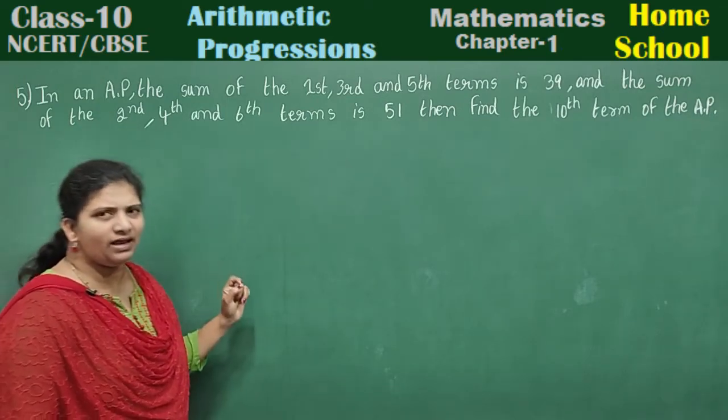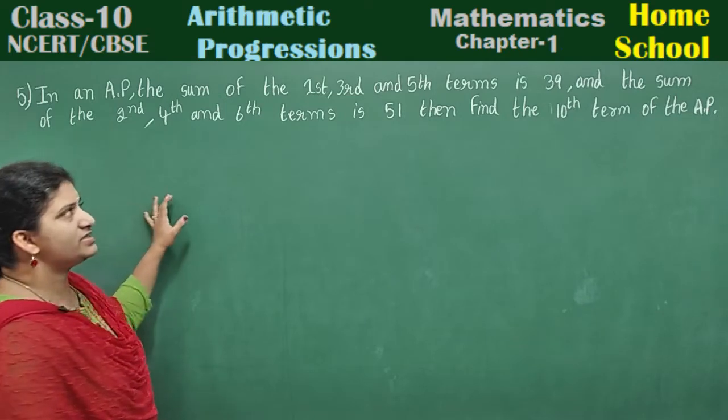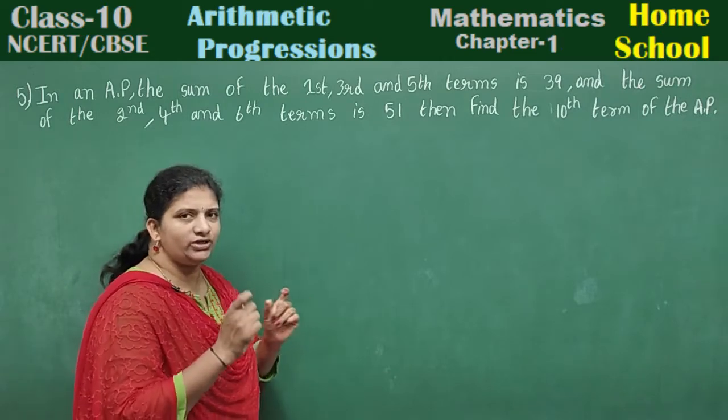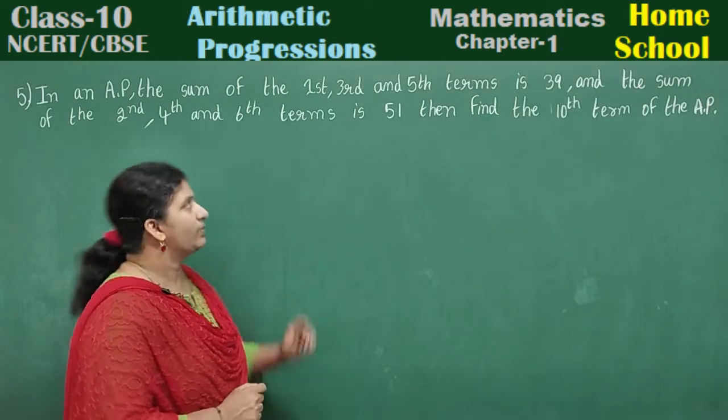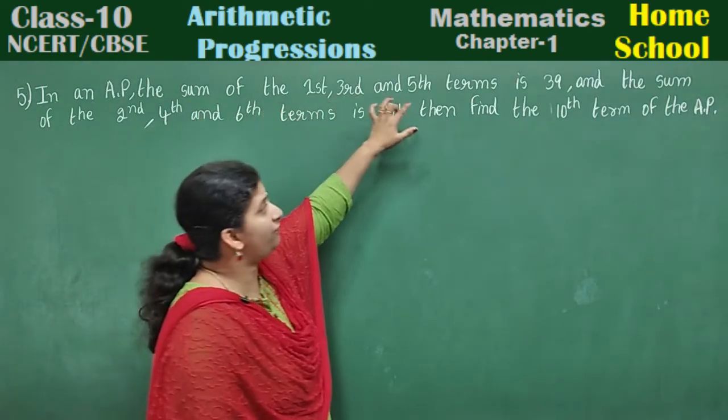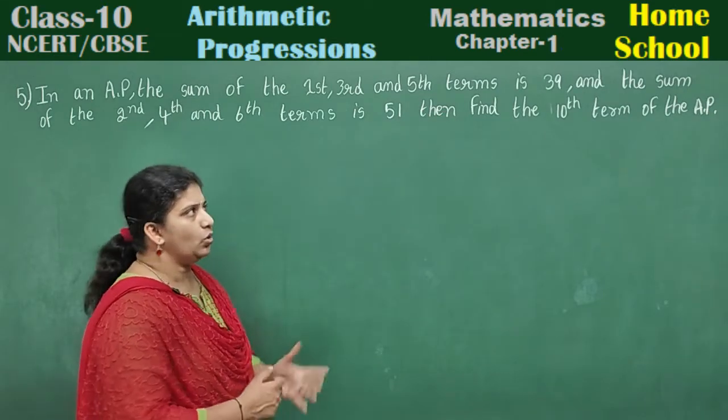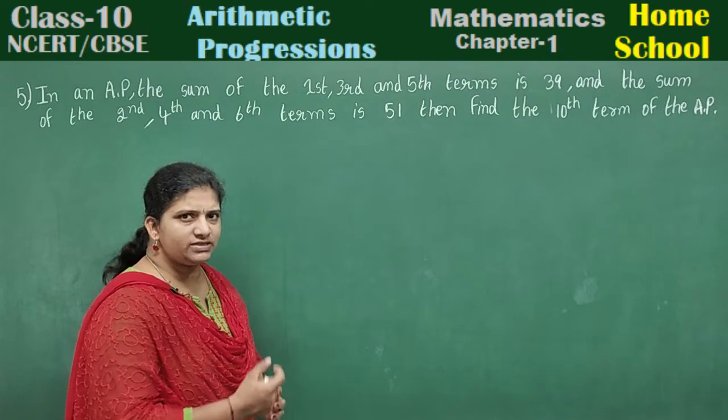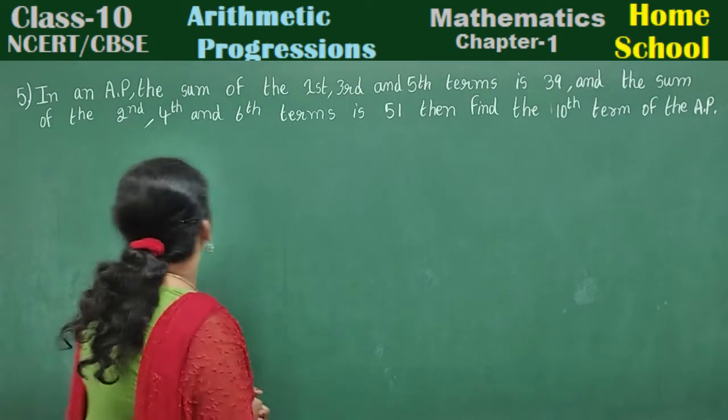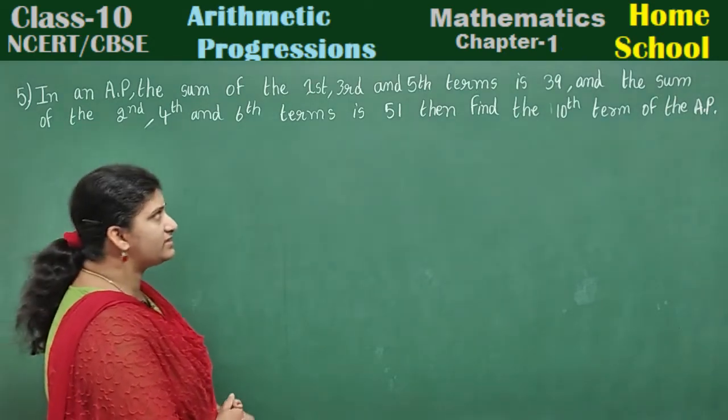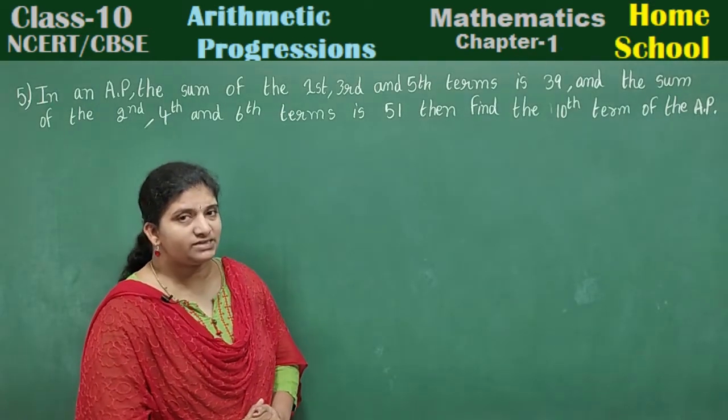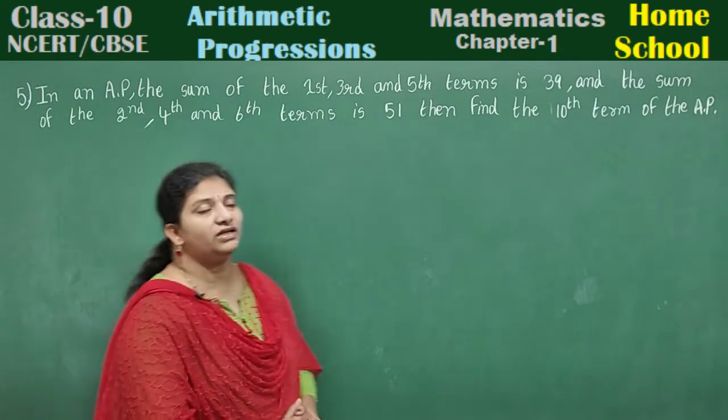In an AP, the sum of the first, third, and fifth terms is 39, and the sum of the second, fourth, and sixth terms is 51. Find the tenth term of the AP.